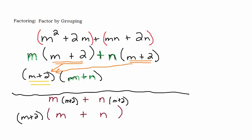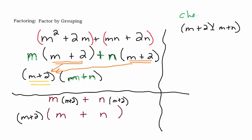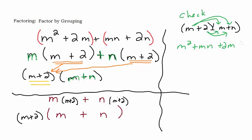You can actually check the answer, which was (m + 2)(m + n), by multiplying it out — you should end up with what you started with. m times m is m², m times n is mn, 2 times m is 2m, and 2 times n is 2n. That's basically what we started with, just rearranged. That's how you can check it and see if it's right.